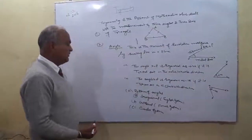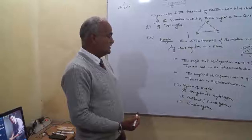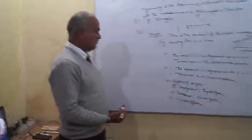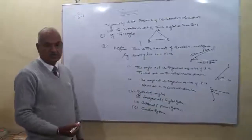What is the system of angles? There are three types of system of angles. First is sexagesimal system, called the English system; centesimal system, the French system; and third is the circular system.